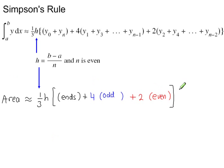And the only even ordinate left here in this example is y2. So you can think of it like this: there's the one third h, the ends—the first y value and the last one—then you're dealing with the odd ordinates, then you're dealing with the even ordinates.